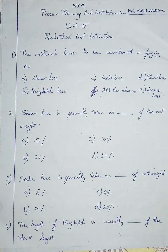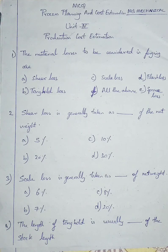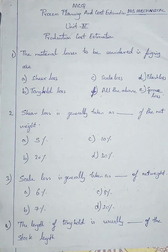Question number one: the material losses to be considered in forging are — option A: shear loss, option B: tongue hold loss, option C: scale loss, option D: flash loss, option E: spear loss, option F: all the above. Shear loss, tongue hold loss, scale loss, flash loss, spear loss — all losses are to be considered during the forging process. Forging means hammering; all operations like bending using heat come under forging. So I'm going with option F, all the above.